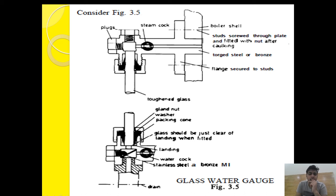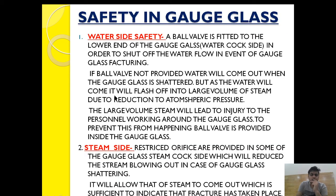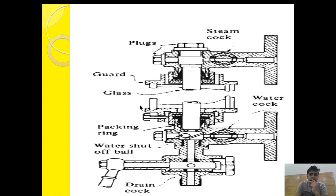So if anyone asks you what the safety features in a gauge glass are, there are two: first, the ball valve on the water side, and second, the restricted orifice on the steam cock side. In normal operation, the ball is maintained in equilibrium, allowing water to continue flowing. If there is no steam to balance that equilibrium, it will shut and block the passage.